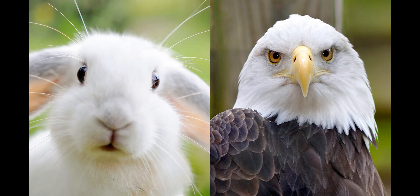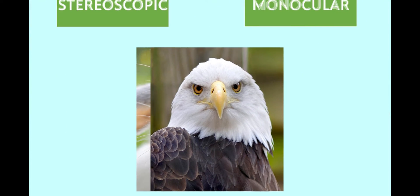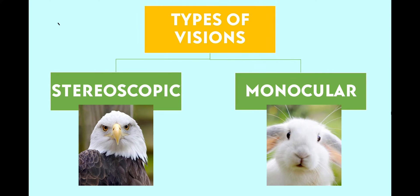Animals need to be aware of the changes that occur in their surroundings to ensure the survival of the species. Like humans, most animals use their eyes, ears, and body to respond to any external stimuli. Animals have two types of vision: stereoscopic and monocular vision. Stereoscopic vision is a vision that uses both eyes at the same time.